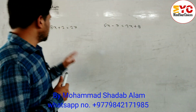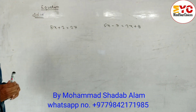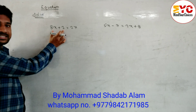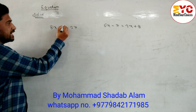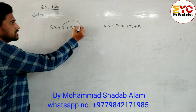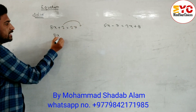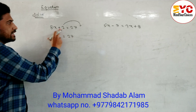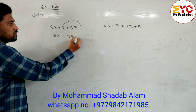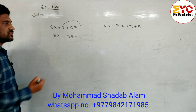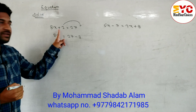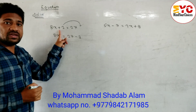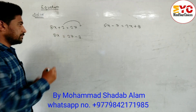You can see here 8x plus 3 is equal to 27. Now these two are unlike terms, so we have to arrange like terms first. We can write 8x is equal to 27. Here is plus 3, so we have to minus 3 — we have to change the sign. If it is plus we have to write minus, and if minus we have to write plus.